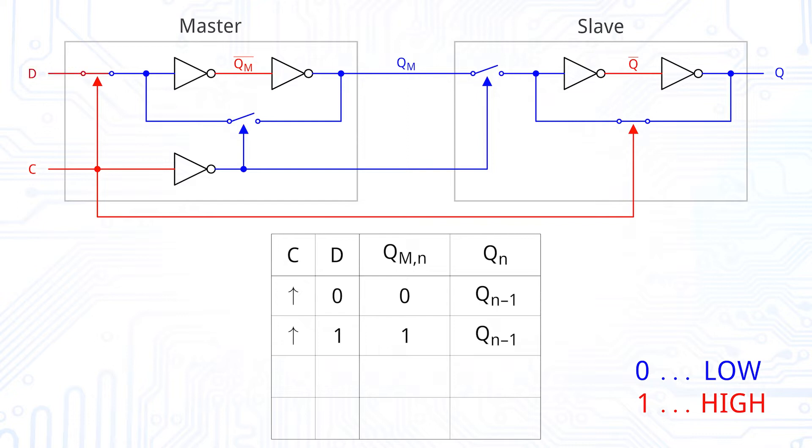As long as the clock signal is high, the master remains transparent. So QM, the output of the master, equals D and the slave keeps the last output. So Q equals Q.